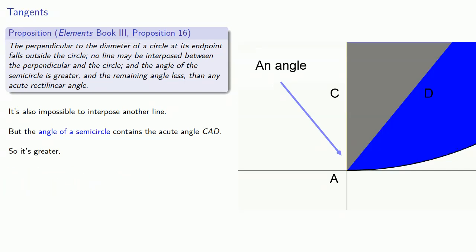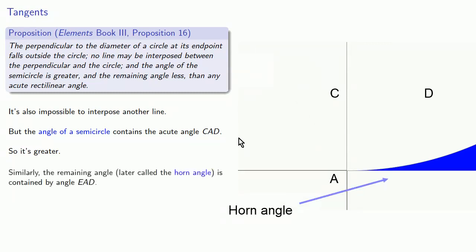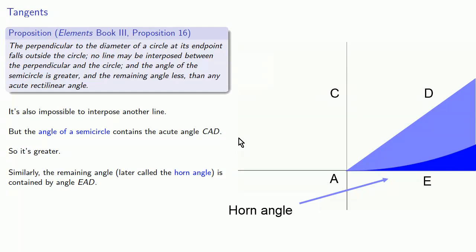Similarly, if we look at this remaining angle, later called the horn angle, we see that it's contained by the acute angle EAD, and so it's less. And what makes this noteworthy is that EAD can be any acute angle.